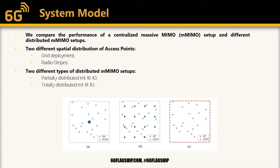A grid deployment of access points, as you can see in figure B, where the access points are positioned in the ceiling of the square area, and the radio stripes deployment, where radio stripes with access points are deployed around the walls of the square area. In the case of distributed Massive MIMO setups, we consider two different kinds of deployments.